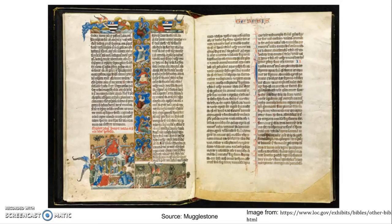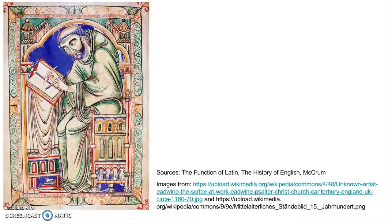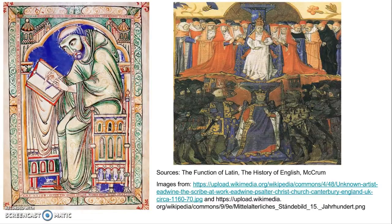Latin was an important part of Christianity at the time. It was the language of the church — services were in Latin, Latin was spoken in monasteries, and the Bible was written in Latin. The first literate Anglo-Saxons were educated by the Catholic Church. To be literate during this time in England essentially meant being fluent in Latin. So Latin was primarily used by church officials and wealthy, educated people. Roughly 400 Latin words that came into Old English from the conversion to Christianity can be found in our language today.